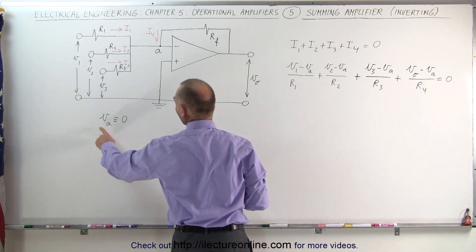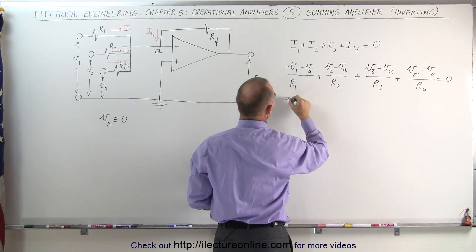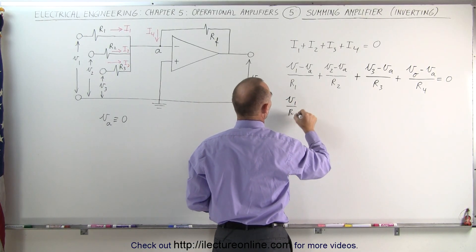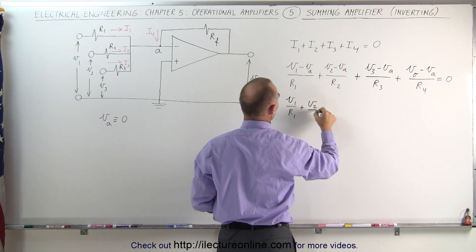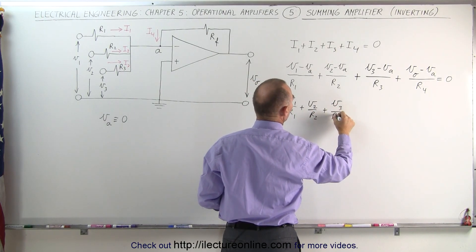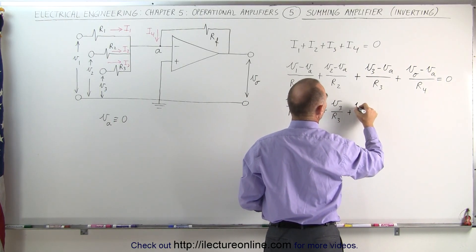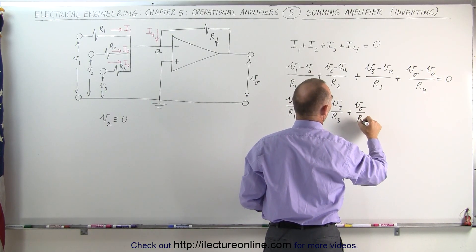Now remember what we said here that V sub A is approximately equal to zero, so we can get rid of all the V sub A's. V sub 1 over R1 plus V sub 2 over R2 plus V sub 3 over R3 plus V sub O over R4.